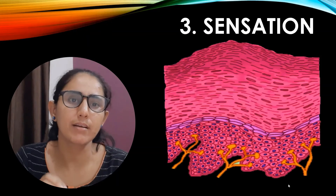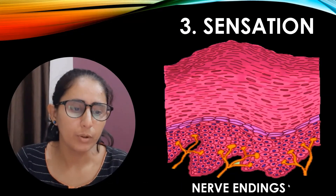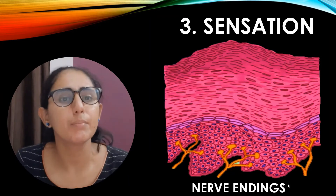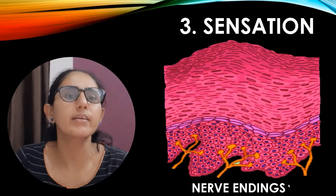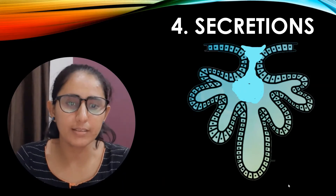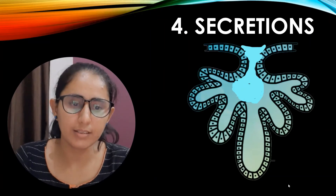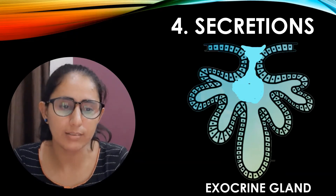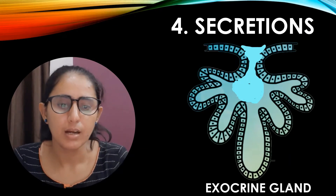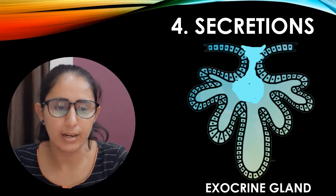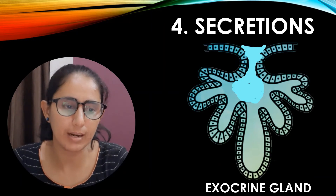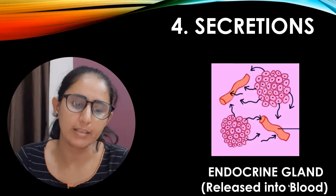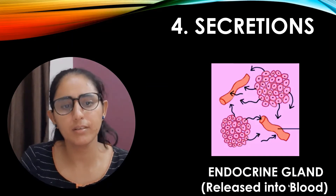Epithelial tissue has a rich nerve supply that gathers important sensory information such as pressure, pain, and temperature, helping stop us from hurting ourselves. Some epithelial tissues are highly specialized and capable of producing secretions. These secretory cells often form epithelial glands — exocrine glands release secretions into ducts and onto the surface of epithelium, such as sweat glands and salivary glands. Endocrine glands release secretions into surrounding tissue and blood; an example is the thyroid gland.